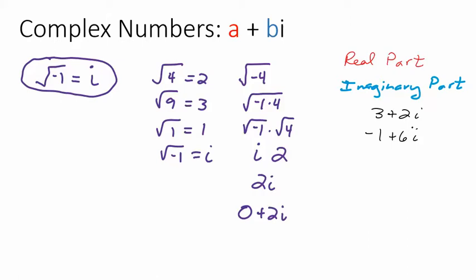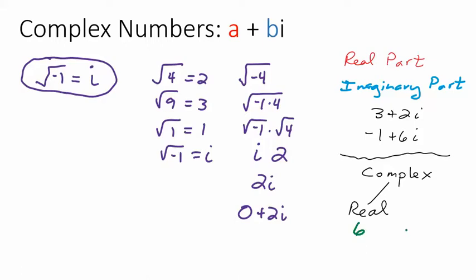In my next video I'll talk about how to add, subtract, multiply, and divide with complex numbers. Before we do more simplifying, one thing to know is that real numbers are a subset of the complex numbers. A real number like 6 can be written as 6 plus 0i — real numbers are complex numbers where b equals zero, which is why they are a subset.